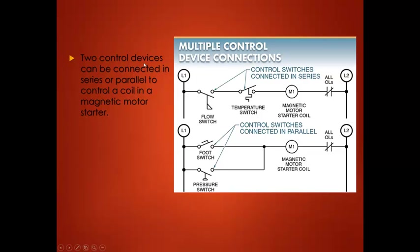Two control devices can be connected in series or parallel to control a coil in a magnetic motor starter. In the series configuration, a flow switch and temperature switch are connected in series — both must be closed for the motor starter to run. Below that is a parallel circuit: if either the foot switch or the pressure switch is closed, current is allowed to flow to the motor starter. So essentially, this or that must be closed for it to run.